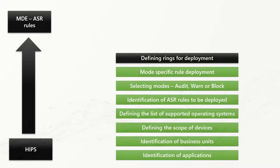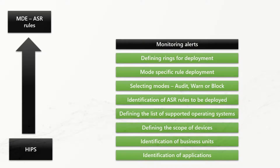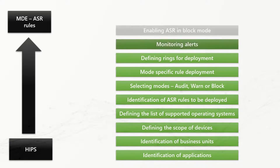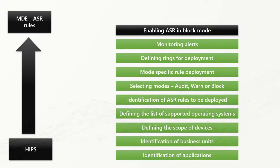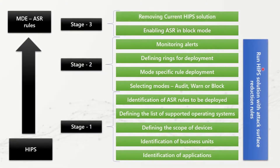The next step is to go ahead and monitor alerts, and based on analysis and refinements, target moving all rules into block state. Once all rules are working in block mode, you can plan to remove your current HIPs solution. For best outcomes, I recommend running the HIPs solution and attack surface reduction rules in parallel so you can evaluate which gives more insights and ensure your security level is not compromised or downgraded during the migration.